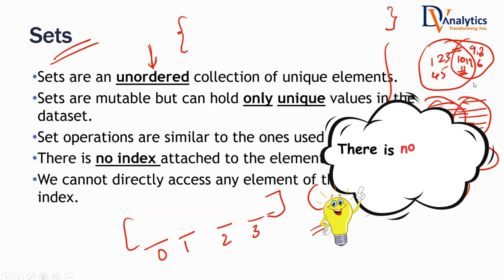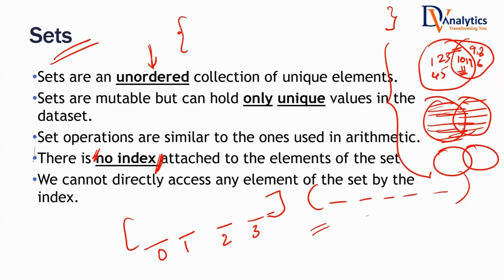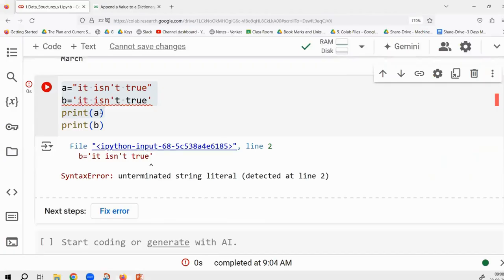There is no index in a set — no indexing at all. So to access values, you may have to store the set again in a list and then index it. It is a somewhat troublesome data type, not always useful, but in some places you may want to store values in a set and access them as a collection.